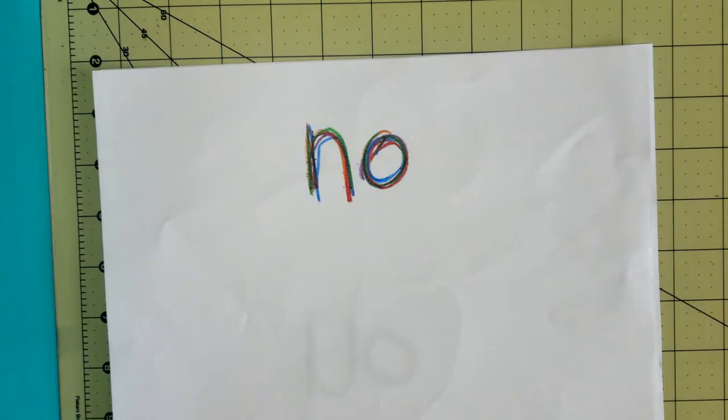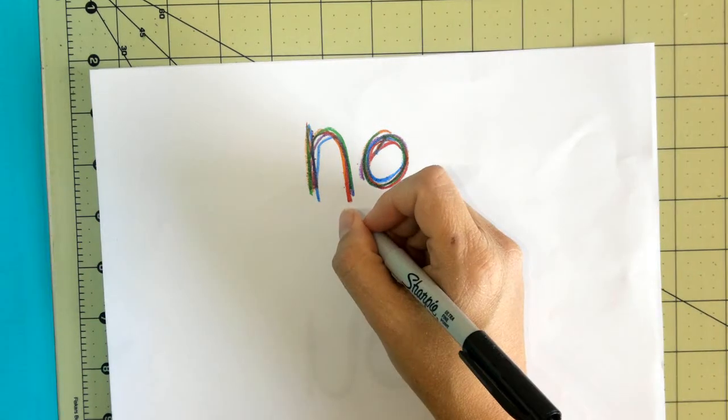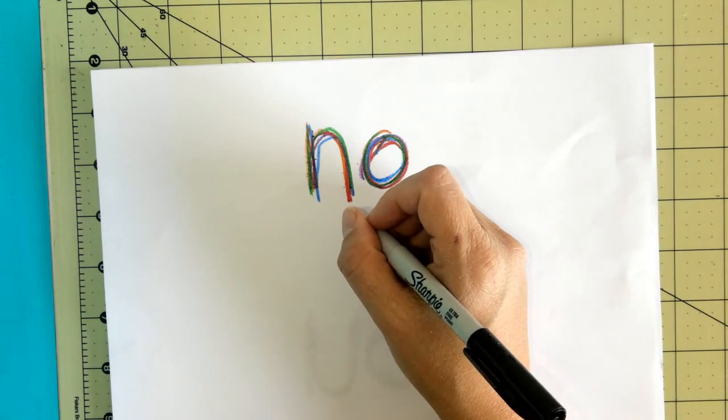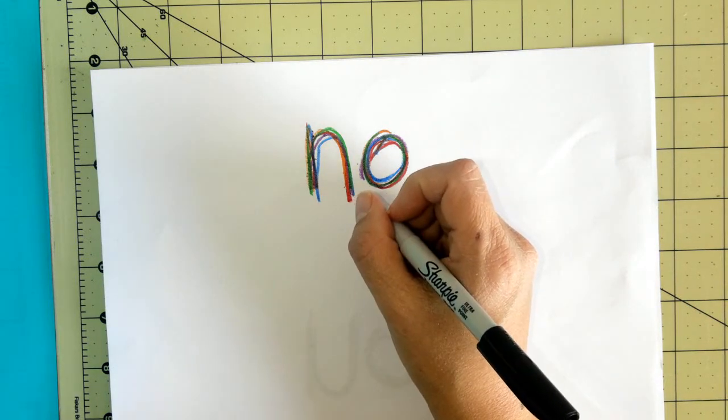Now we're going to use the word no in a sentence, okay? So this N-O-no is like, no, I didn't. I have no candy.